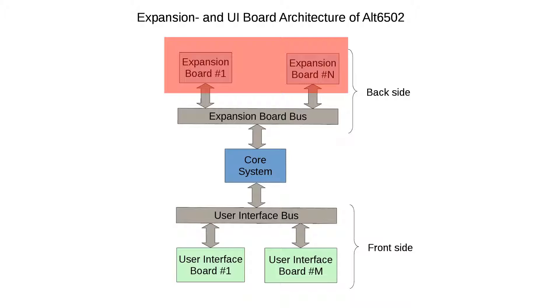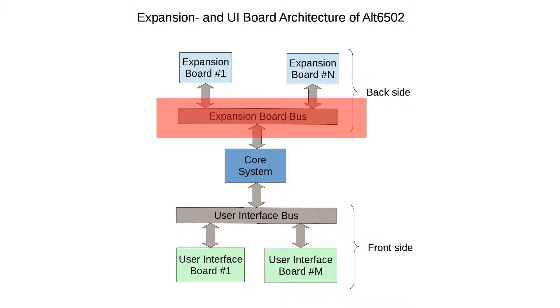Such environment interaction is assigned to the expansion boards which reside on the back side of the computer. Expansion boards are exactly what it sounds like — cards for audio, video, storage, communication, etc. These boards are attached to the core system via the expansion board bus.